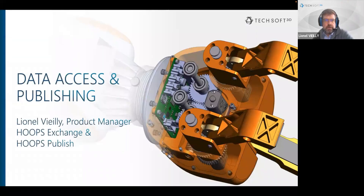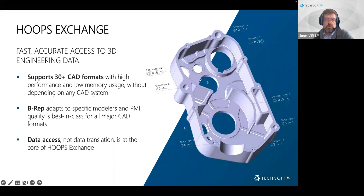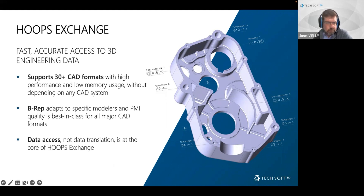Thanks Robert. I'm Lionel Vielli, product manager for HOOPS Exchange, our data access toolkit, and HOOPS Publish, our publication toolkit. HOOPS Exchange is an engineering data access SDK that delivers access to more than 30 CAD and BIM formats through a single interface — allowing your application to read CAD data, BIM data like CATIA V5, NX, Creo, Revit and others, and also export to standard formats like STEP, JT and others.